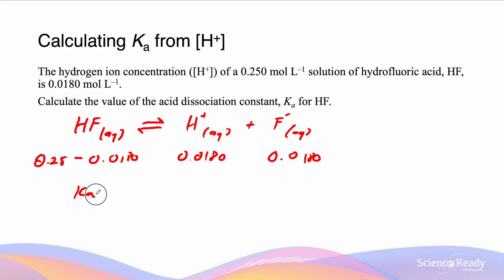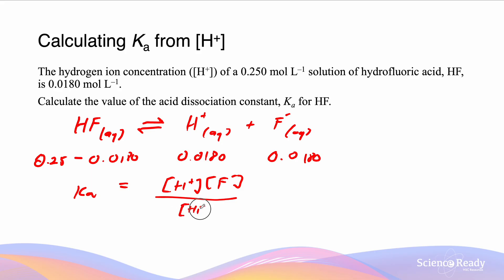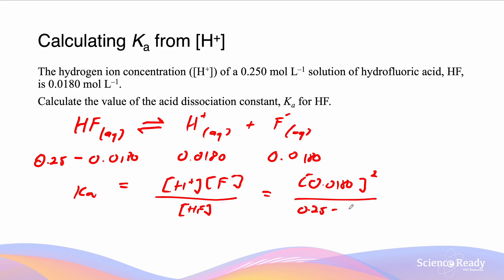The Ka expression is given as [H⁺][F⁻] / [HF]. Substituting the values, we get (0.0180)² / (0.25 − 0.018), which gives a value of 1.40 × 10⁻³. This is given to three significant figures.